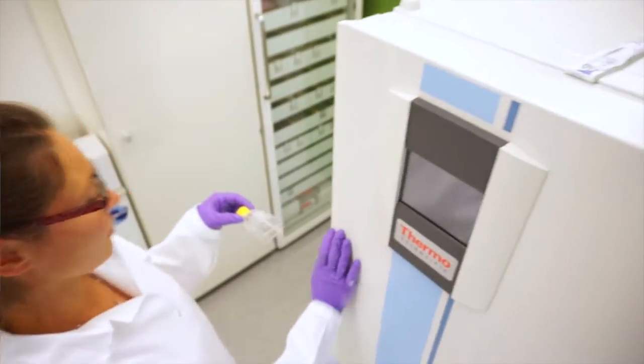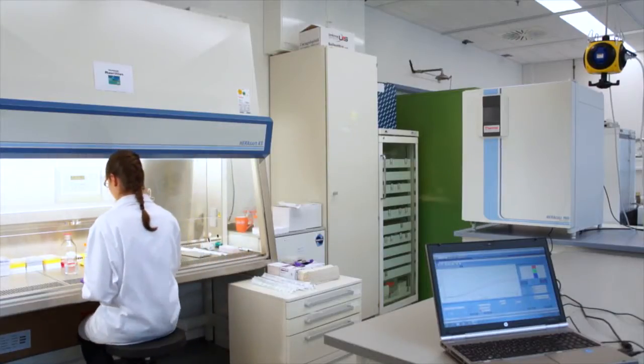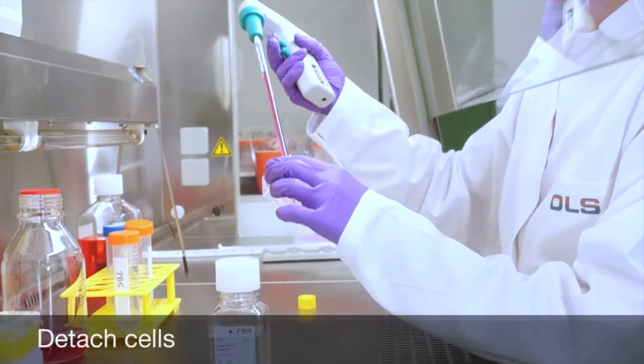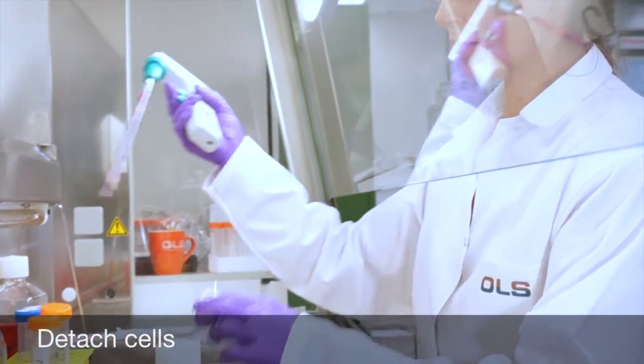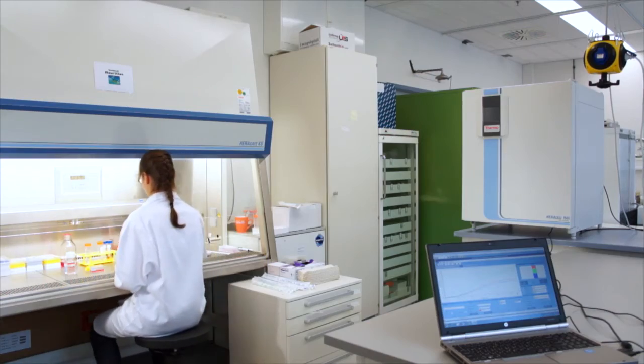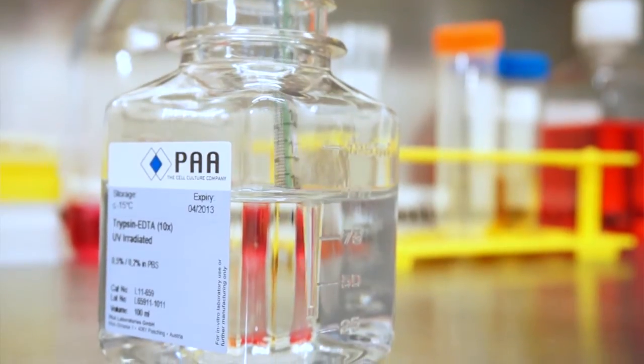It's easy to run a cell migration assay using the Xcelligence DP instrument. The station is located inside the CO2 incubator. A connected laptop computer runs the software.